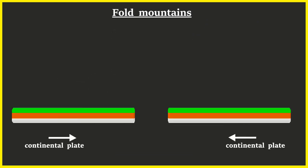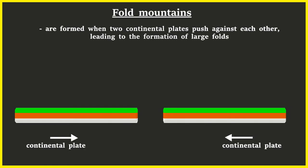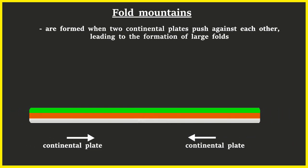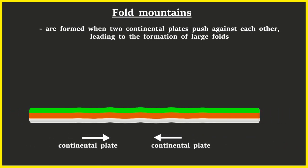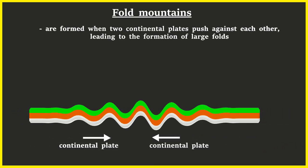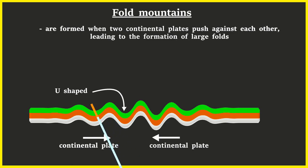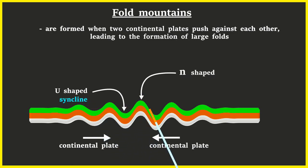Fold mountains are formed when two continental plates push against each other, leading to the formation of large folds on the Earth's surface. The U-shaped part of the fold is called the syncline, while the N-shaped part is called the anticline.